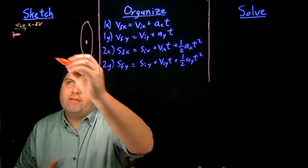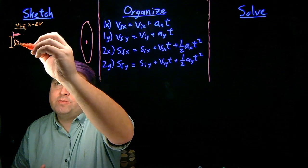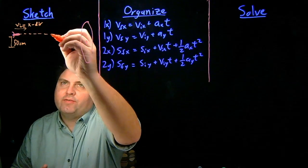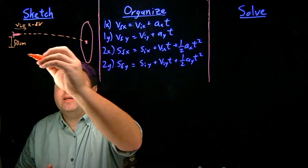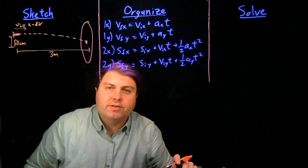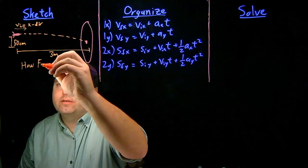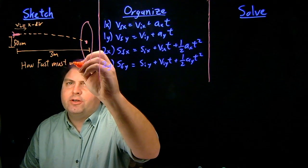So that means that we have to have our dart be some distance above the bullseye. We're going to say 50 centimeters, and then it's going to travel in a path like this over 3 meters. We want to know how fast must we throw the dart.